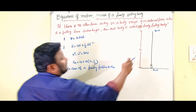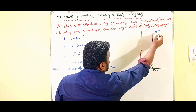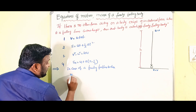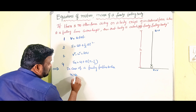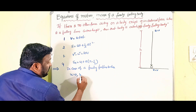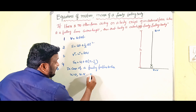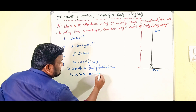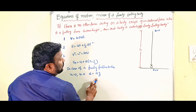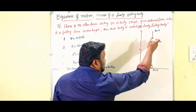In that figure, u is the initial velocity. In case of a freely falling body, u is equal to zero, and the final velocity is v, so v is equal to v.